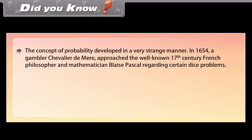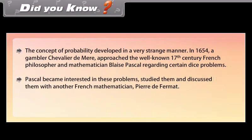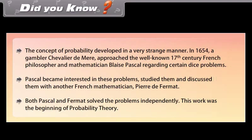Did you know? The concept of probability developed in a very strange manner. In 1654, a gambler, Chevalier de Méré, approached the well-known 17th century French philosopher and mathematician Blaise Pascal regarding certain dice problems. Pascal became interested in these problems, studied them and discussed them with another French mathematician, Pierre de Fermat. Both Pascal and Fermat solved the problems independently. This work was the beginning of Probability Theory.